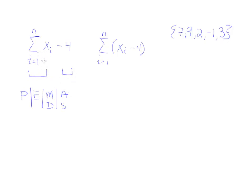So I would do this summation first using the values here. So that would be 7 plus 9 plus 2 plus negative 1 plus 3. Work that out, and then at the end, I would subtract 4.